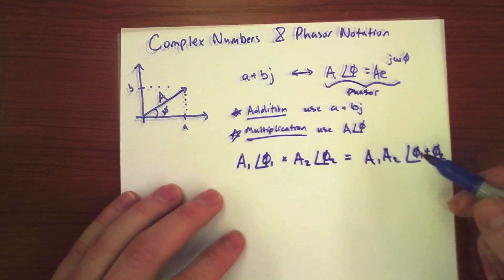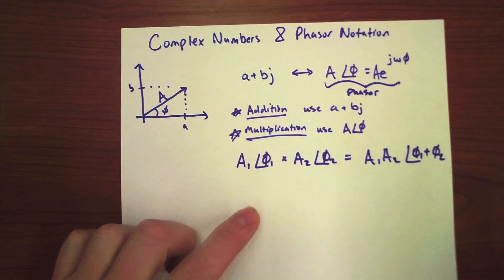And if we're dividing, we're simply going to subtract phi1 by phi2.